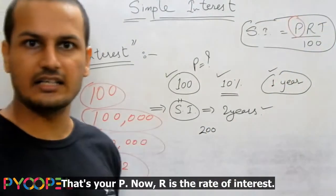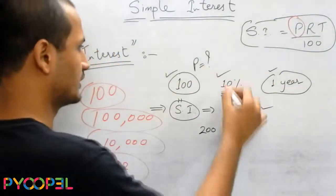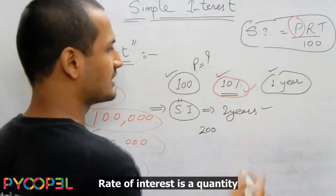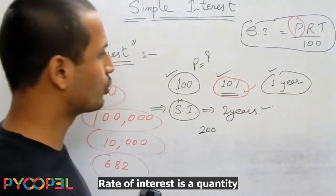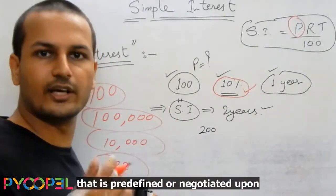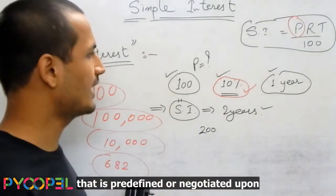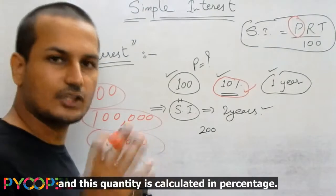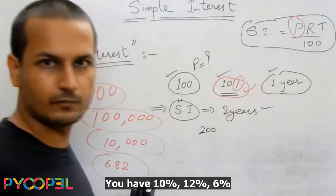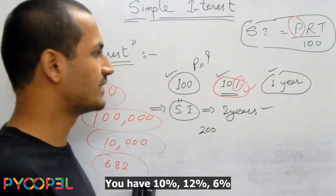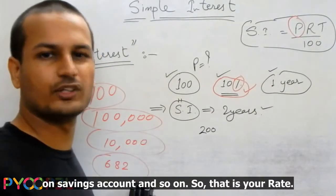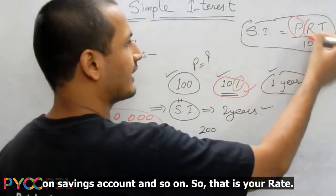R is the rate of interest. As I have already mentioned, this is the quantity that is predefined or negotiated upon. This quantity is calculated in percentages — so you have 10%, 12%, 6% on a savings account, and so on. That is your rate.